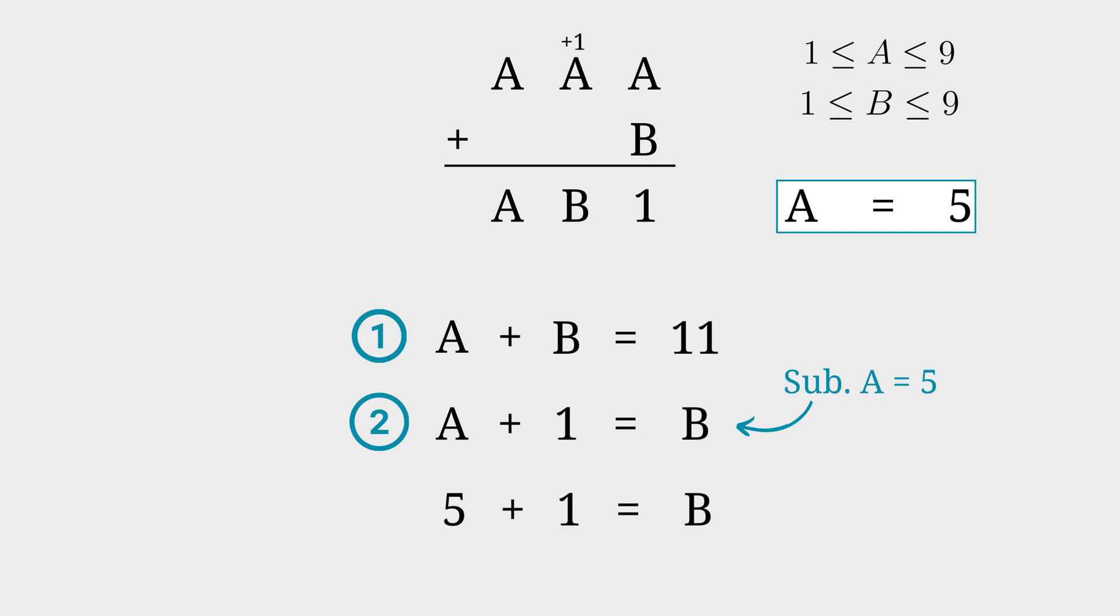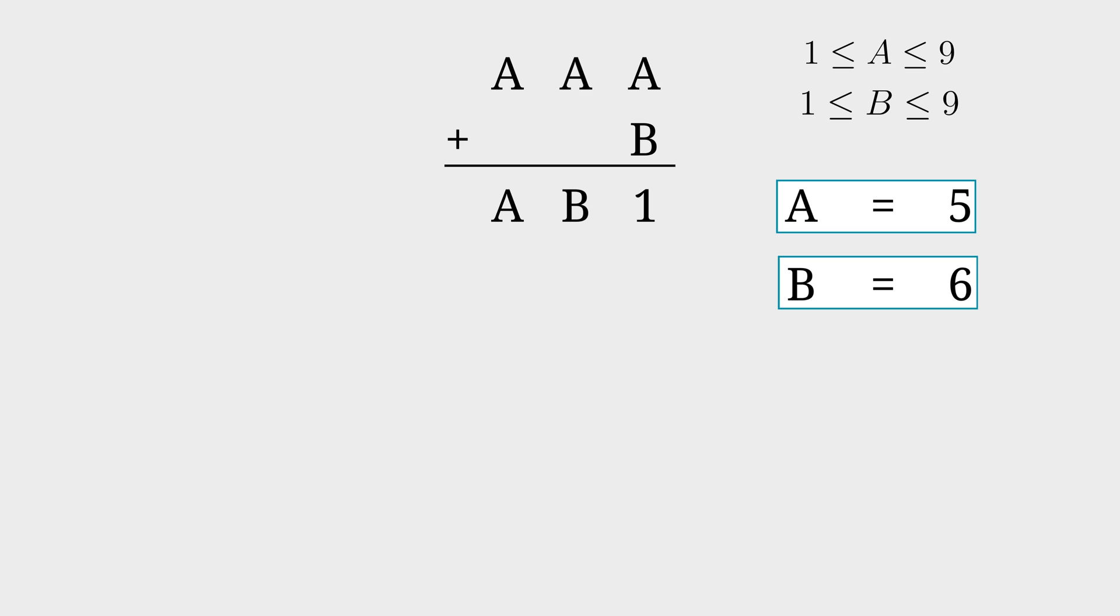So 5 plus 1 is equal to B, and then you can say B is equal to 6. Here you have the two values for A and B, both in the range specified.